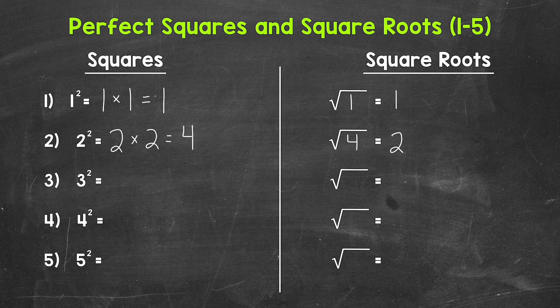Let's move on to number 3, where we have 3 squared. That means 3 times 3. 3 times 3 equals 9, so 3 squared equals 9. That means that the square root of 9 equals 3.